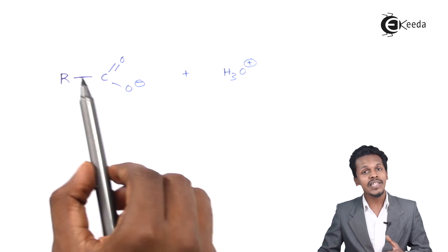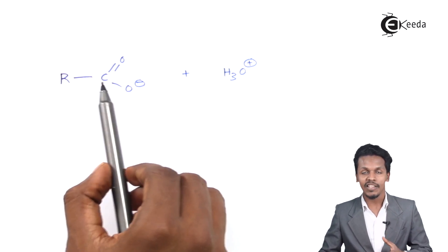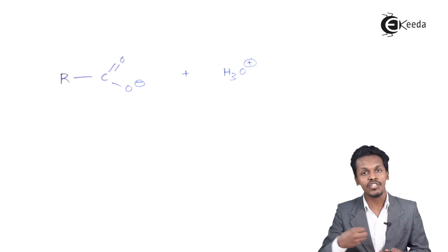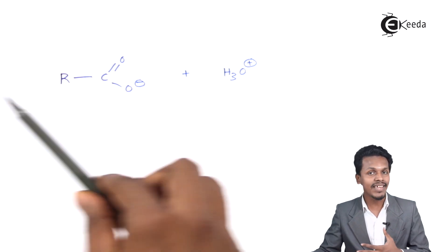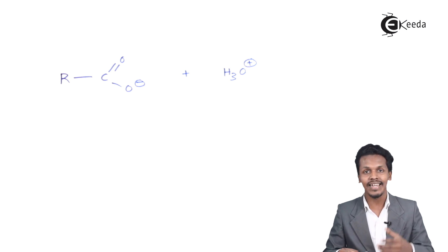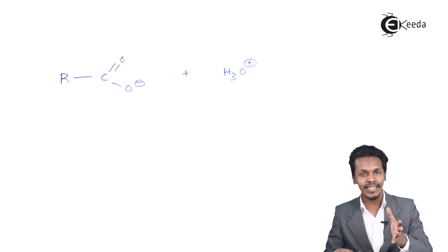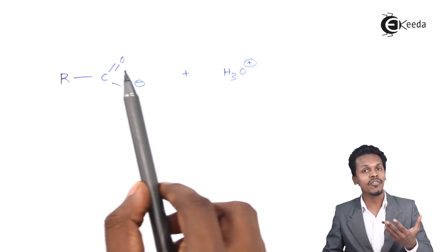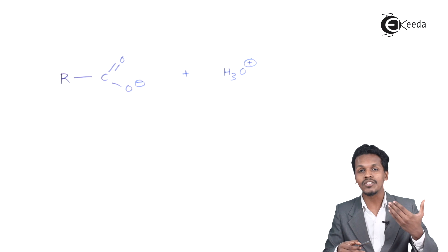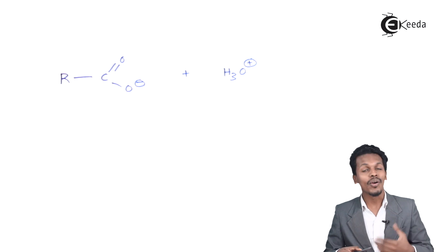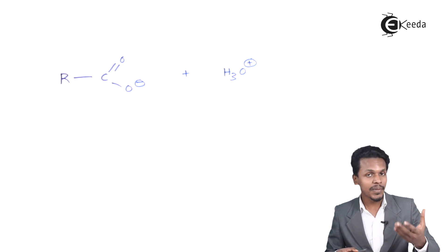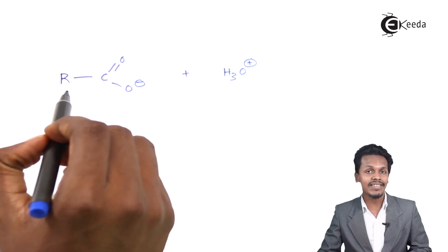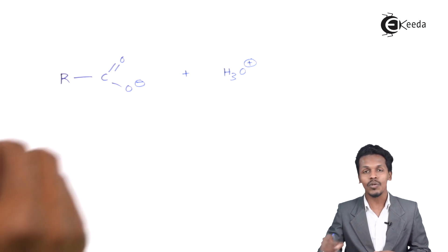If the carboxylate ion is very stable, then it will release its H⁺ ion very easily. And we can say that the carboxylic acid which produces the carboxylate ion along with the H⁺ ion will be very strong — that is, its acidic strength will be more. So to achieve that, we have to stabilize this carboxylate ion.